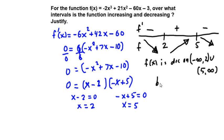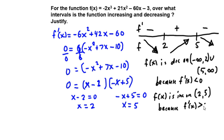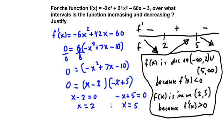And why? Because f'(x) is less than 0. And f(x) is increasing on interval 2 to 5. And why is that? Because f'(x) is greater than 0. The abbreviations can be a little different, but this is really what I'm looking for, plus all the analysis, minimum of which is to find the critical numbers.